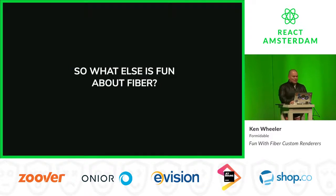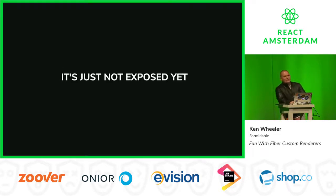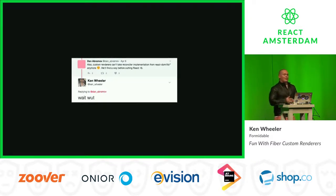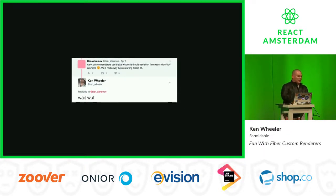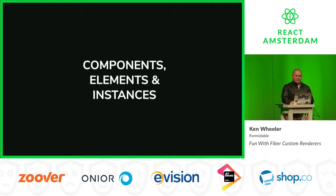What else is fun about Fiber? For me personally, it's the first-class custom rendering API, which doesn't actually exist yet — it sort of does but it's not exposed. I'm going to show you a tweet between me and Dan Abramov from two weeks ago. Up to this point you'd import these things from react-dom/lib. When they switched to flat packaging, Dan said you can't do that anymore — but the important part of his tweet is that they'll find a way before cutting React 16, giving us a first-class interface for custom renderers.